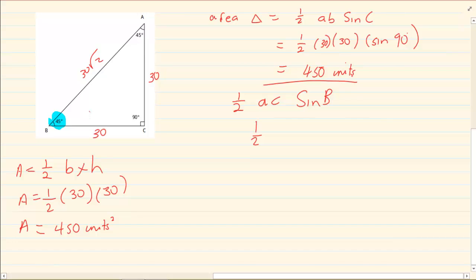It would be a half. My a would be 30. My c would be 30 root 2. And I would have sin 45 degrees. And your answer would still be 450 units squared.